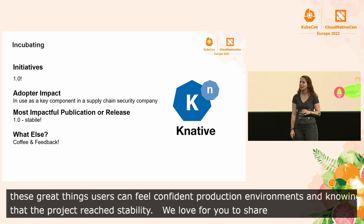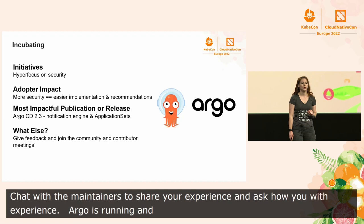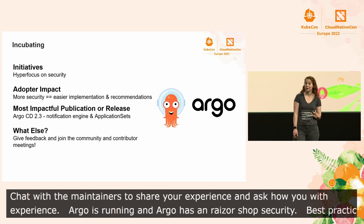Argo is a set of Kubernetes native tools for running and managing jobs and applications on Kubernetes. Argo has had a razor-sharp focus on security that goes back more than six months, leading to better documents, better best practices, a hardened, more robust and reliable code base with several process enhancements, a lot of which was driven from their security audit.